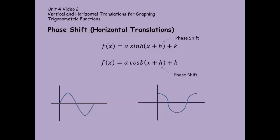Let's remind you where that phase shift comes from. It's the one that's inside of the parentheses and that's going to move us left and right. Reminder: it always goes the opposite from what it looks like. So we're going to start with a reminder — this is our sine graph and this is our cosine graph.